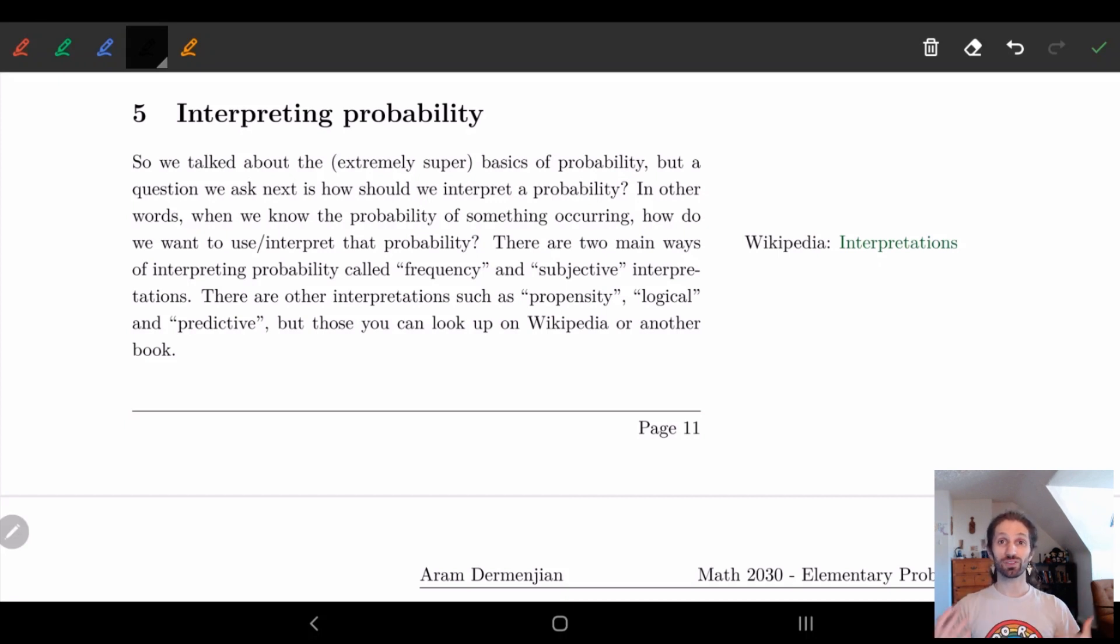Hi. So today or in this video we'll be talking about interpreting probability and how this kind of works out. So we so far have talked about the super basics of probability. We're going to get much more deep in that later this week in future videos. But for now the question now becomes: how do we interpret probability?